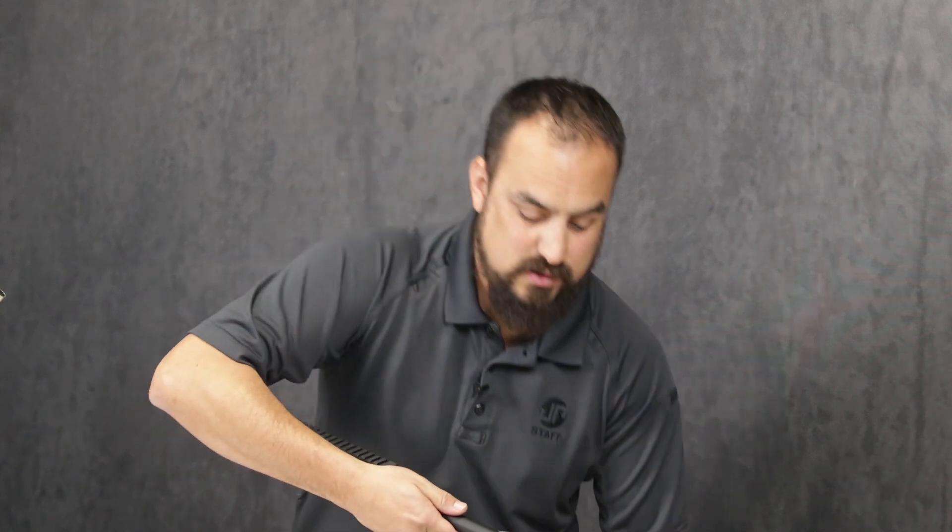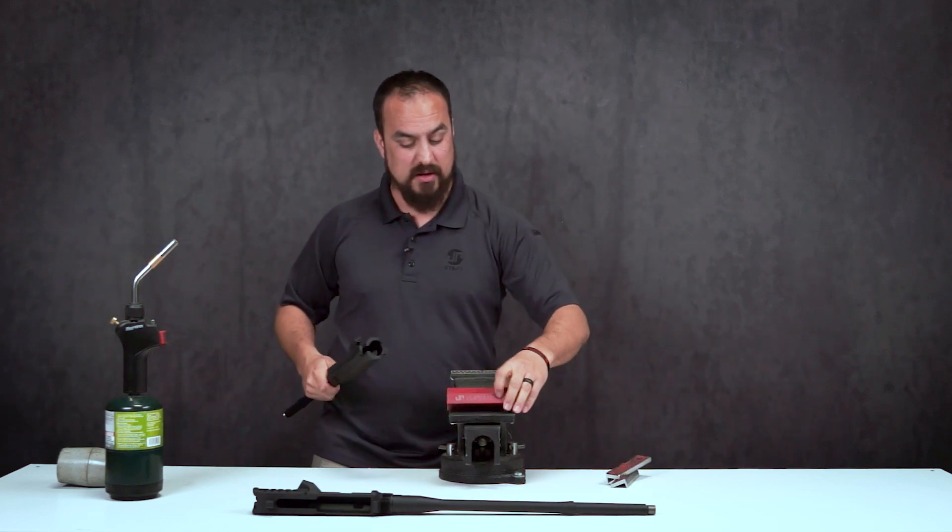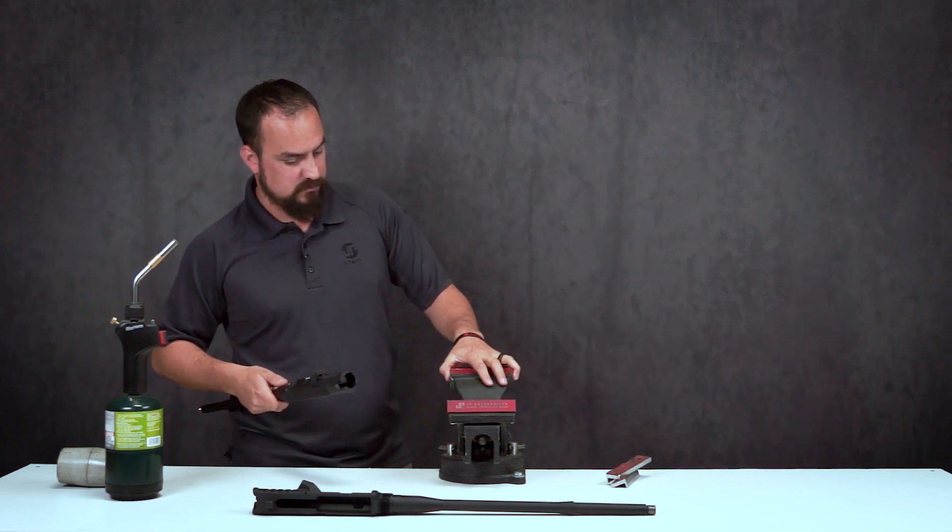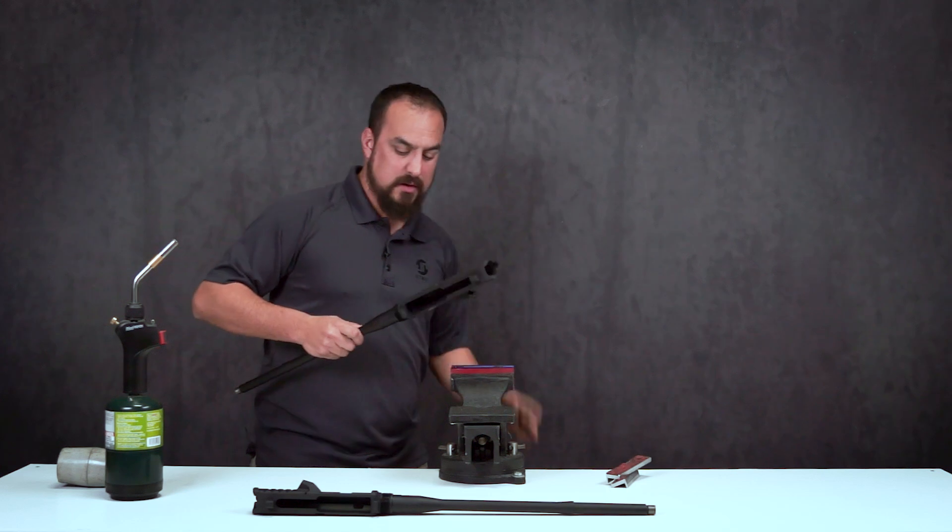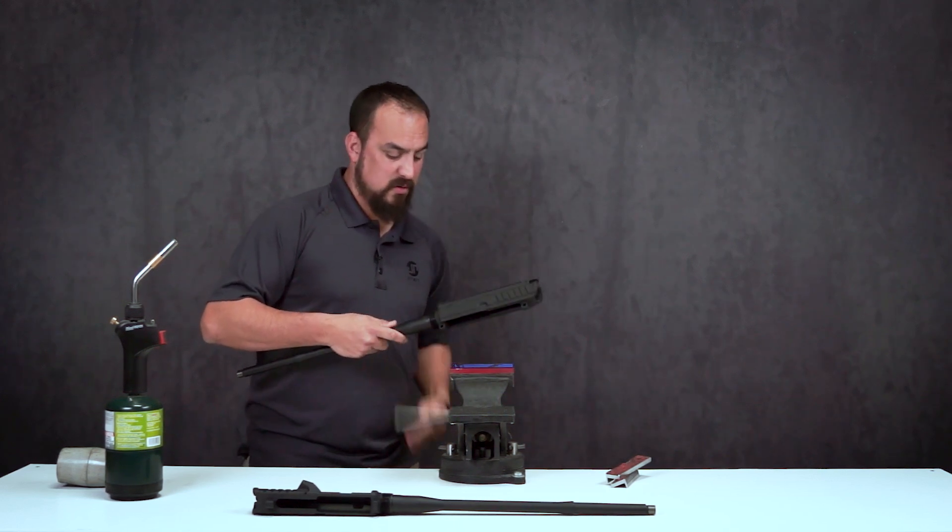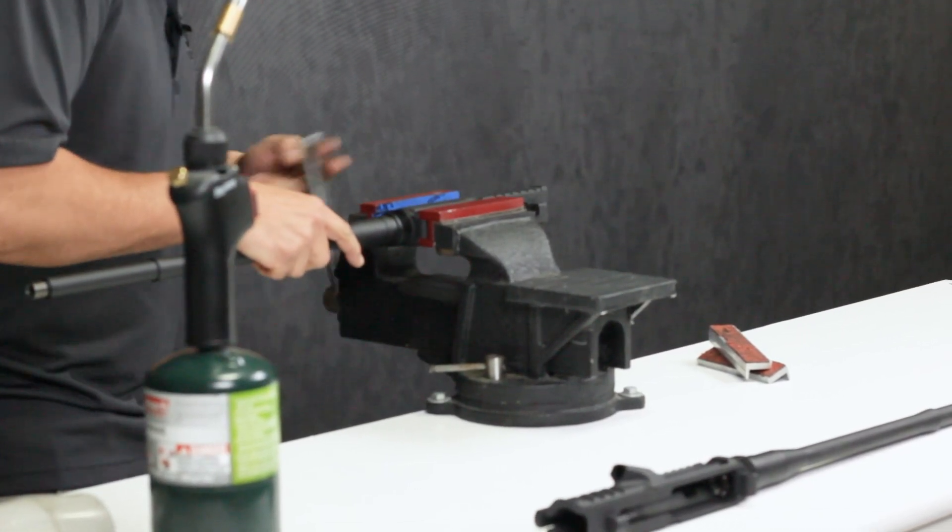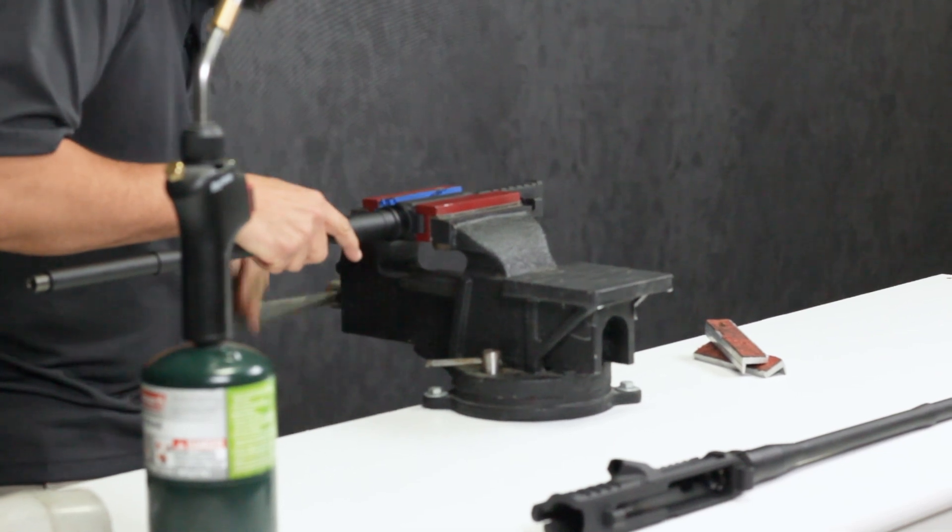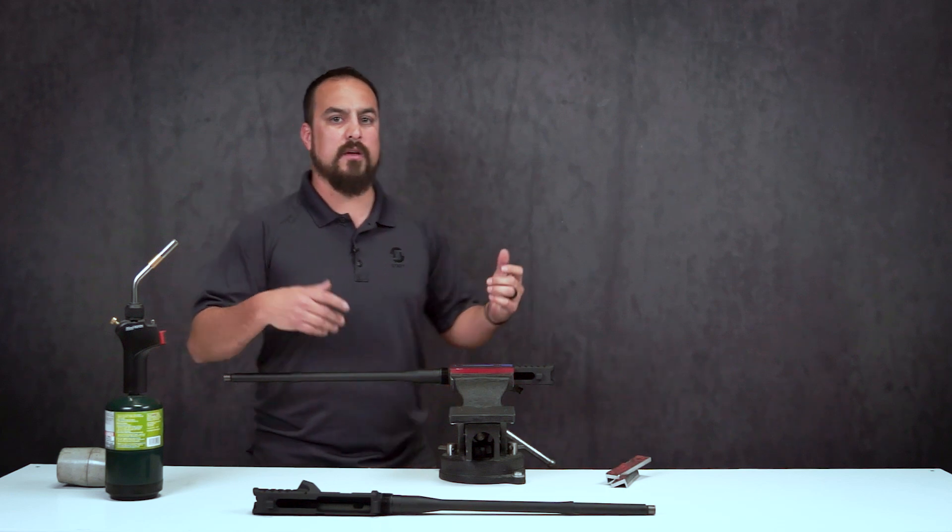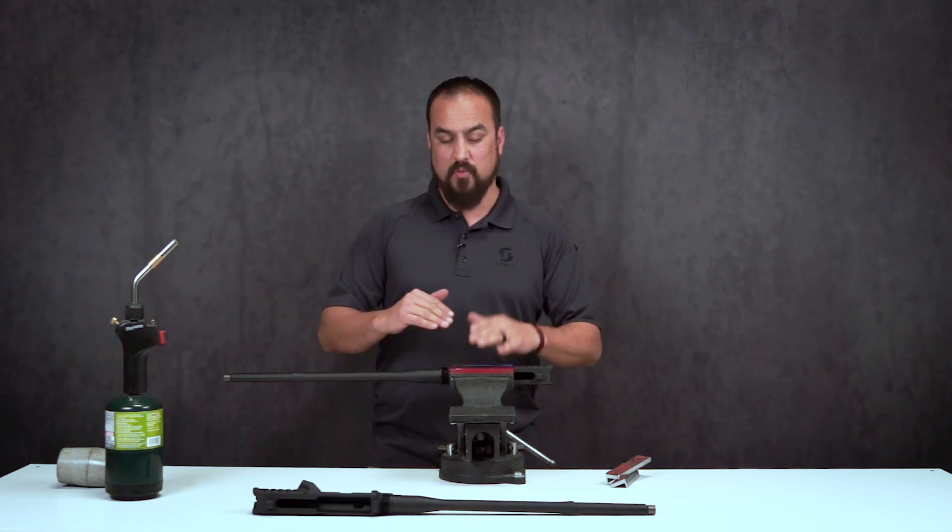So all we're going to do is we're going to grab our JP vice blocks here, take our receiver and we're going to assume that this guy is messed up.